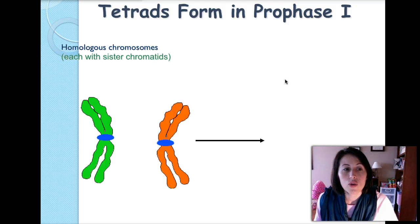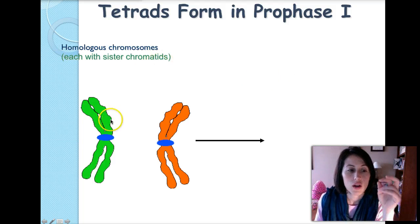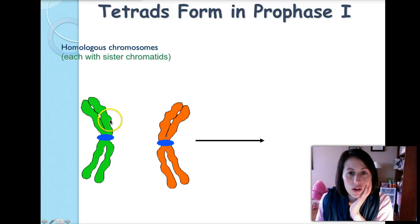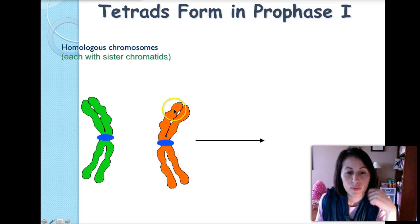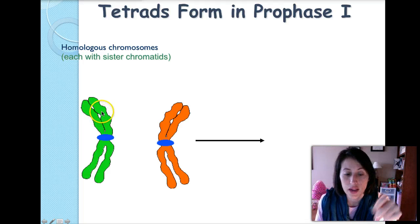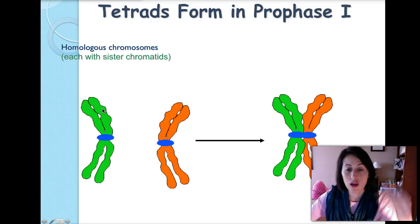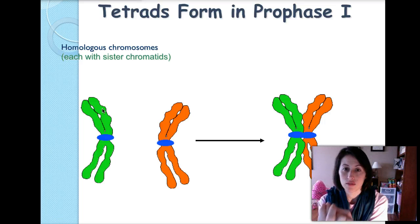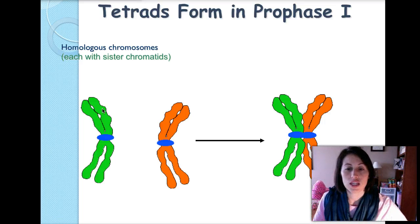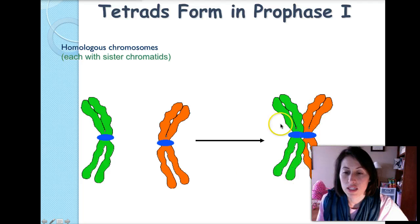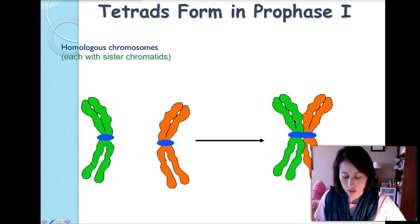The homologous chromosomes — one inherited from your mother and one from your father — each have sister chromatids because they have been replicated prior to this happening. In prophase one they form a tetrad, which just means the homologous chromosomes come together. It's called a tetrad because there are four sister chromatids all of the same genetic content pushed together.